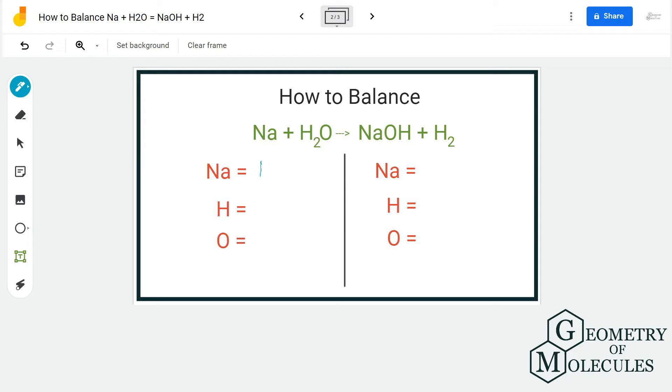For the reactant side, we have one sodium atom, so we are going to put one over here, two hydrogen atoms, and one oxygen atom. And as we move forward to the product side, we have one sodium atom.